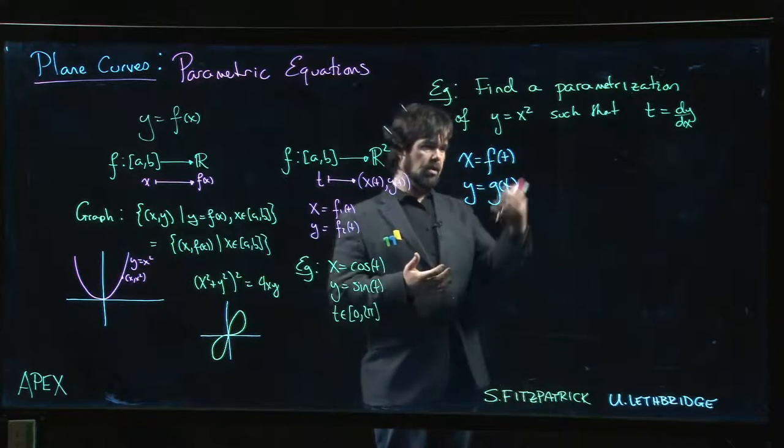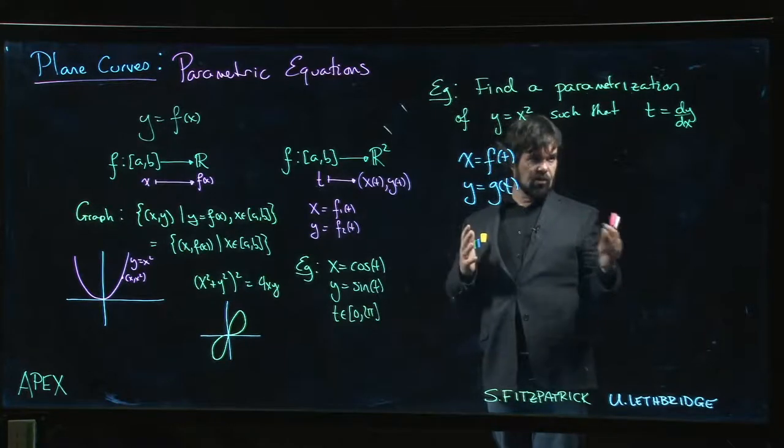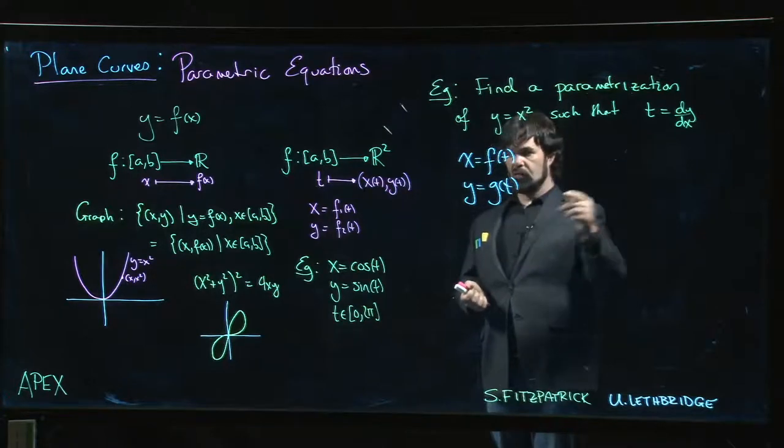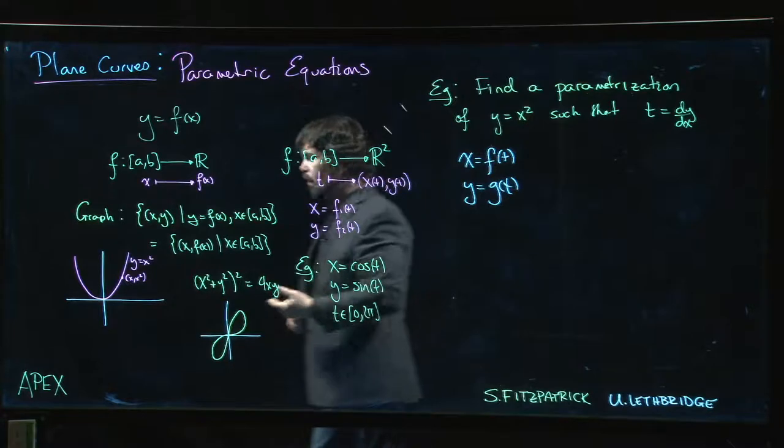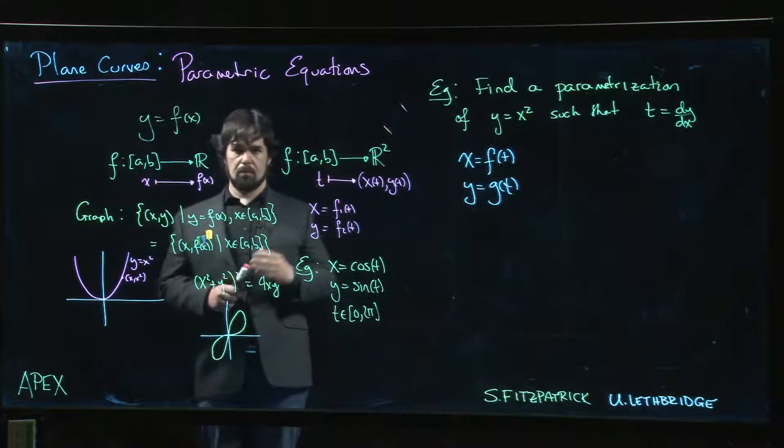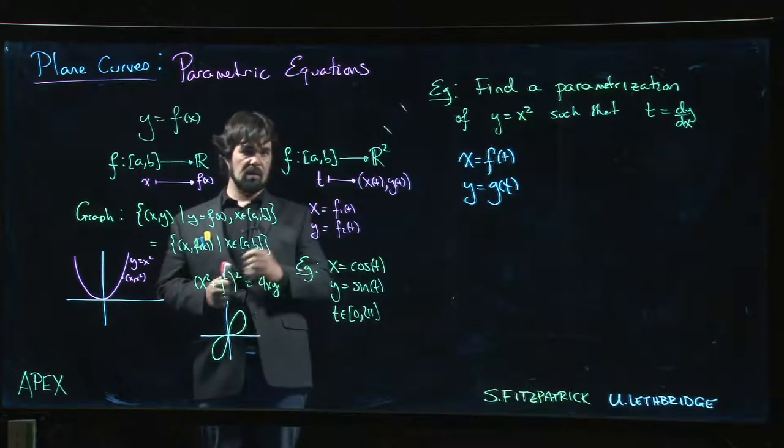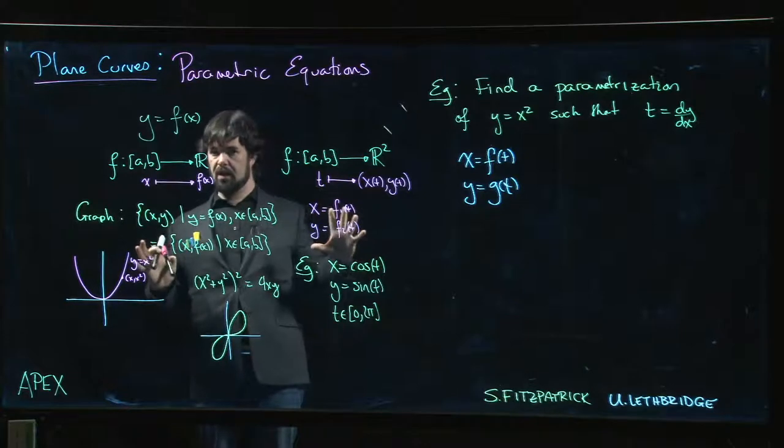The choice of parameter actually plays a role in generating the points but also in thinking about how you move along the curve. One of the examples we skipped used a different parameterization for the parabola than the one we did in the previous video, and one of the things you find when you plot points is the points are spaced differently depending on the parameter.